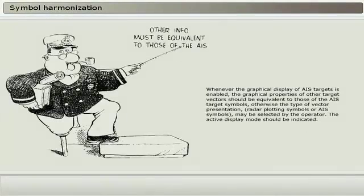When the graphical display of AIS targets is enabled, the graphical properties of other target vectors should be equivalent to those of the AIS target symbols. Otherwise, the type of vector presentation, radar plotting symbols or AIS symbols, may be selected by the operator. The active display mode should be indicated.